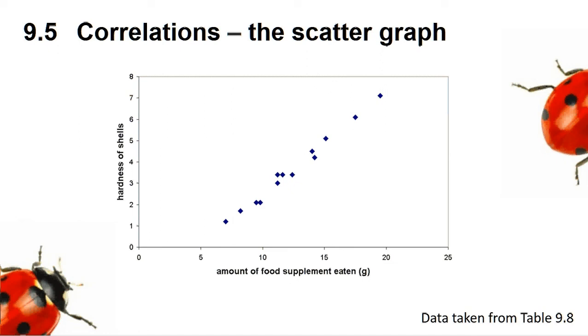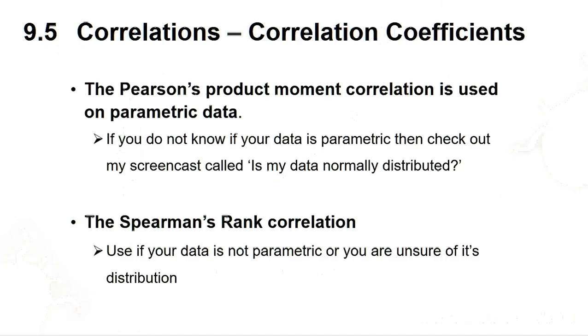This is where we can use the Spearman's rank correlation and the Pearson's product moment correlation to give an indication whether the relationship you see is real. The Pearson's product moment test is used on parametric data. If you do not know if your data is parametric, then check out my screencast called Is my data normally distributed? If your data is not parametric, or you are unsure, then you can use the Spearman's rank correlation.